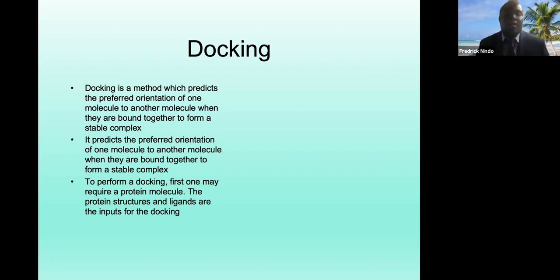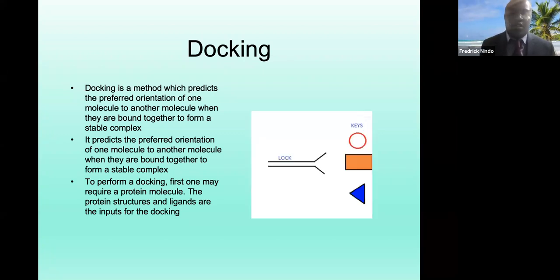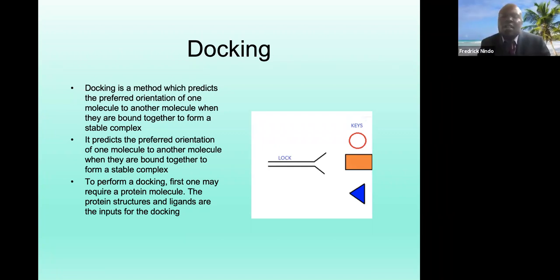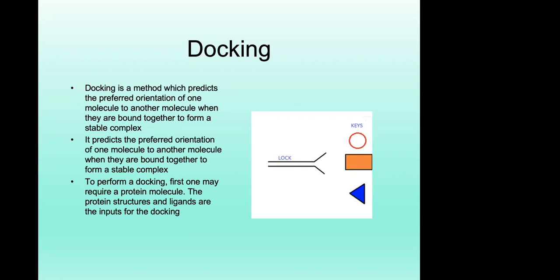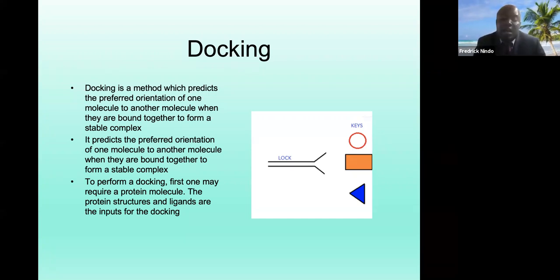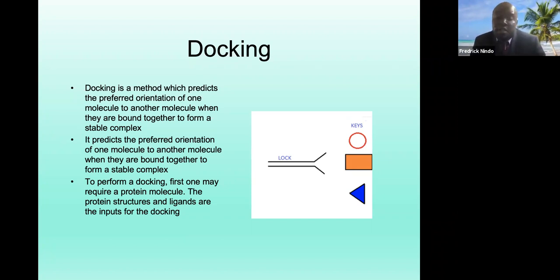To perform docking, you require protein structures and ligands as inputs. It's illustrated as a lock-and-key model — of those shapes, the triangle fits best. If I evaluate binding affinity using a quantity called RMSD, the triangle will bind more firmly. Its binding affinity will be much higher than the other shapes in this illustration.